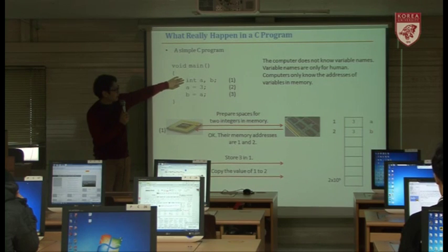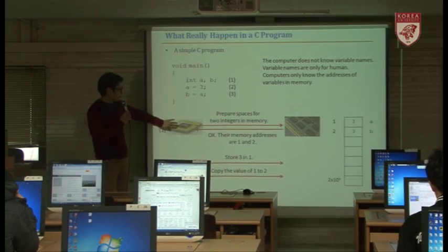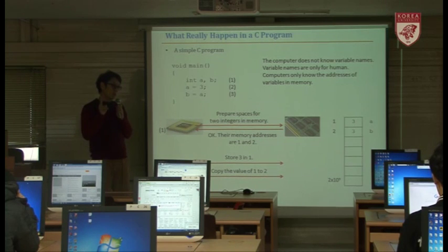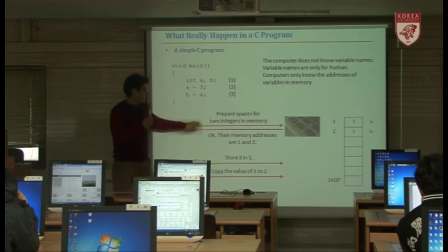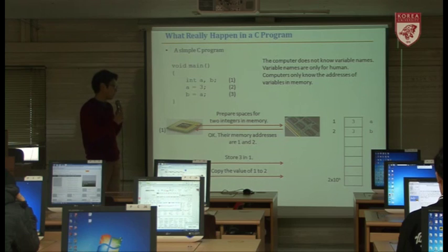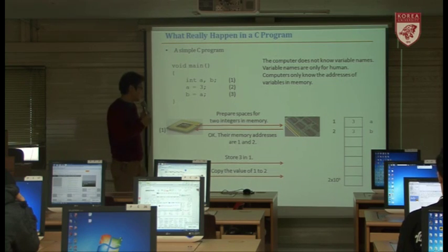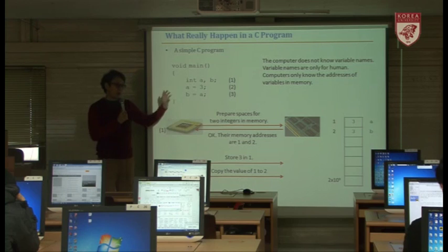When you state the first statement — declaring two integer variables — the CPU actually orders the memory: 'I'm going to use two integer variables, so please prepare space or rooms for two integers in memory.' This actually orders the memory to reserve two rooms for A and B. But the machine doesn't know A and B — it just makes two memory spaces.